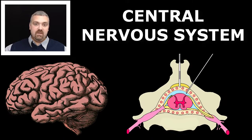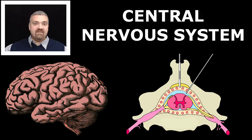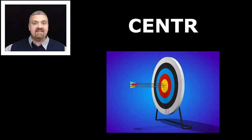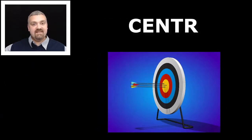Then we clearly have the central nervous system. The central nervous system is the portion of your nervous system in the center — your brain and spinal cord. As we'll see in a moment, everything else is the peripheral nervous system. So that is 'center,' which means at the center.